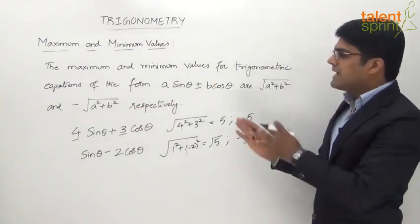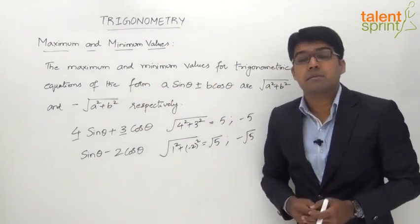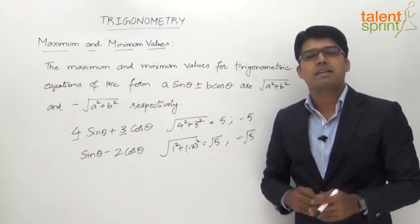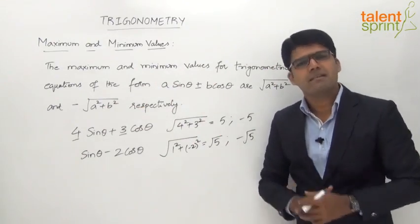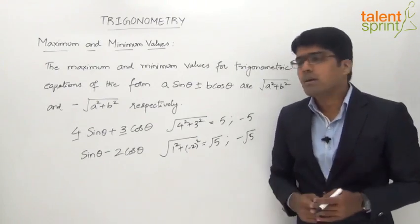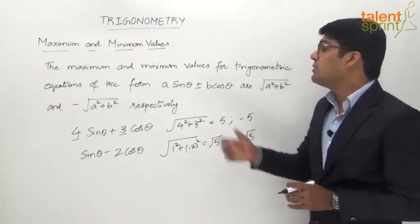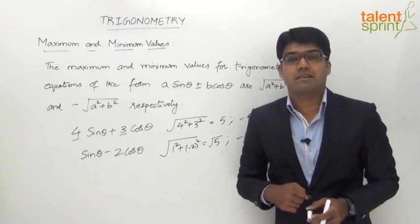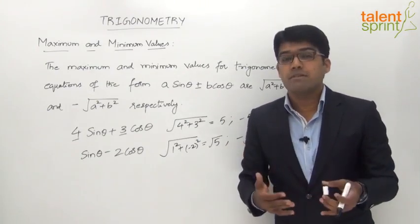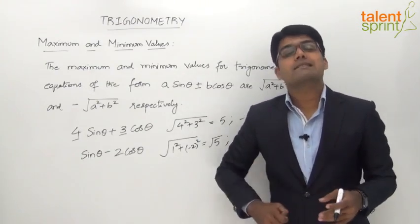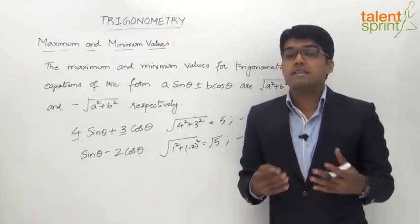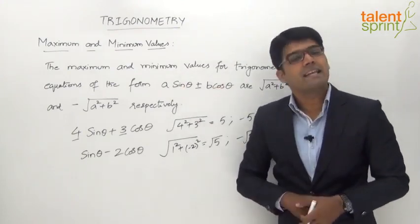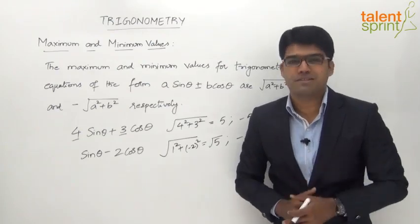Simply take a and b and get the maximum and minimum values as √(a² + b²) and −√(a² + b²) respectively. However, a question may not always be of the form a·sinθ ± b·cosθ. So let us now take a few examples to see how to find the maximum and minimum values of equations that are not of the standard form a·sinθ ± b·cosθ.